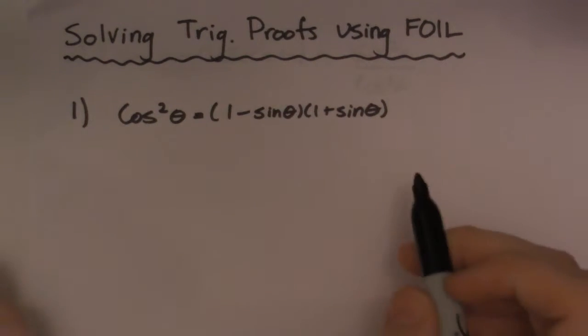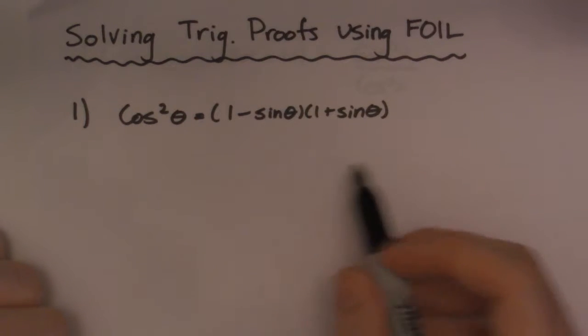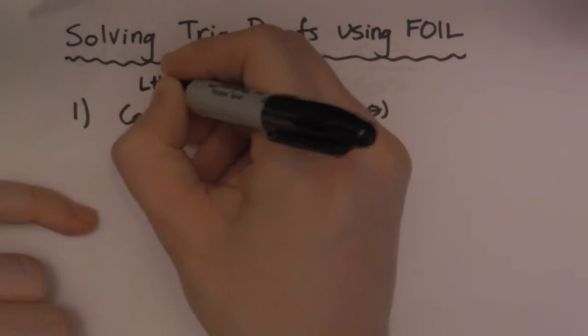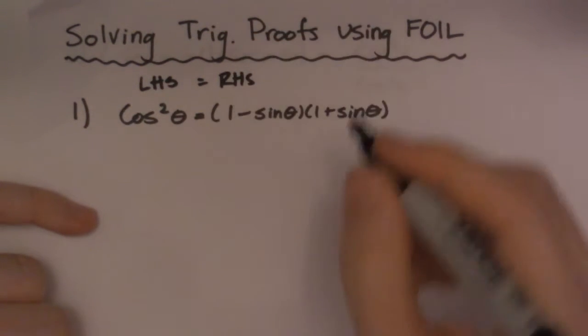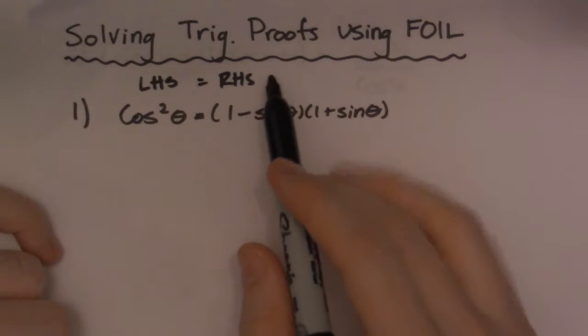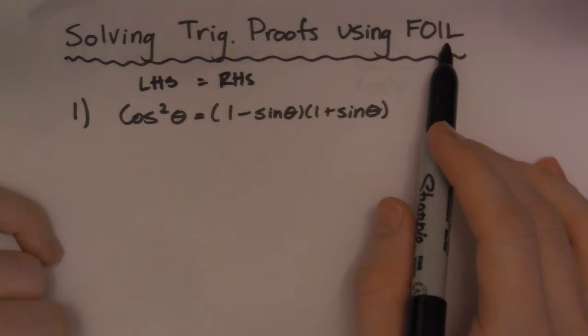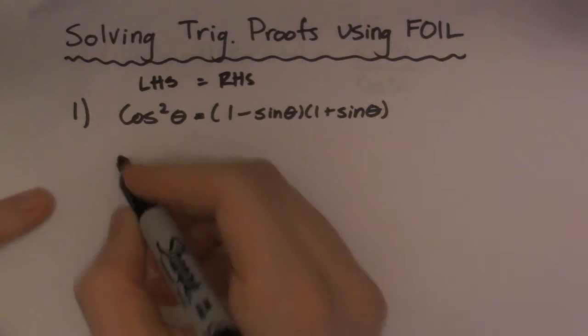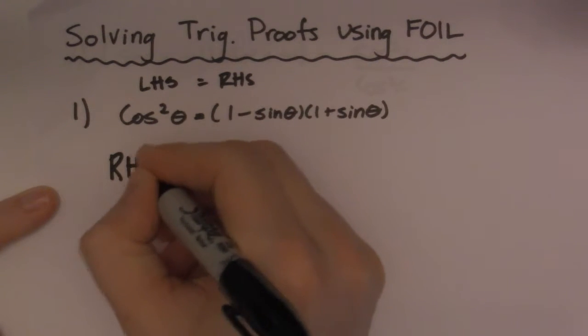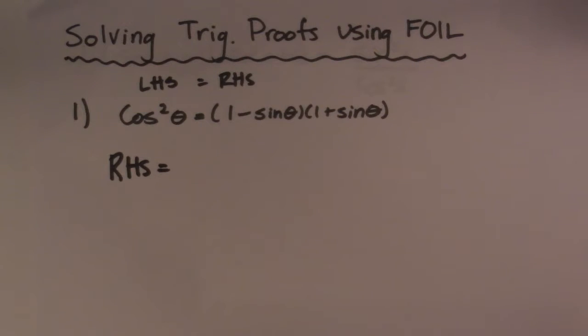So generally the battle with this, the first thing you have to decide is do I want to start with the left hand side or the right hand side. So what I tell my students is that any time FOIL is involved you start with that side. So I'm going to start with this FOIL side right here. I'm going to start with my right hand side is equal to.